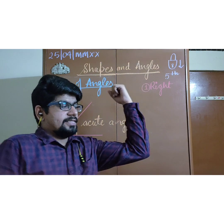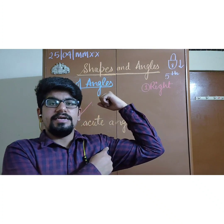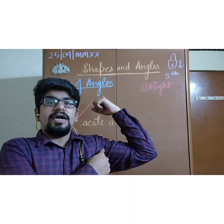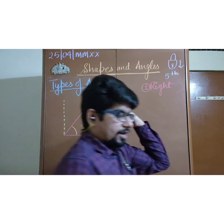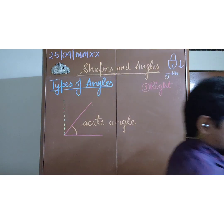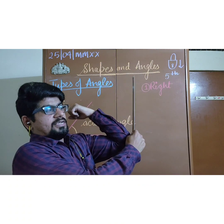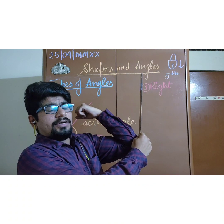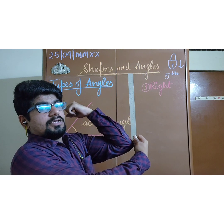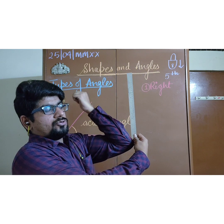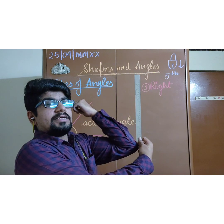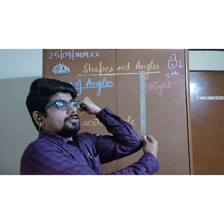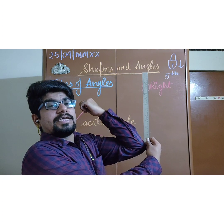Here you can see my arm making an angle. This angle is less than 90 degrees. If I keep a scale here to show what a right angle would look like — standing straight on my arm — then my actual arm is coming within the area of the right angle. So this arm is making an angle which is less than 90 degrees, and this type of angle is called an acute angle.